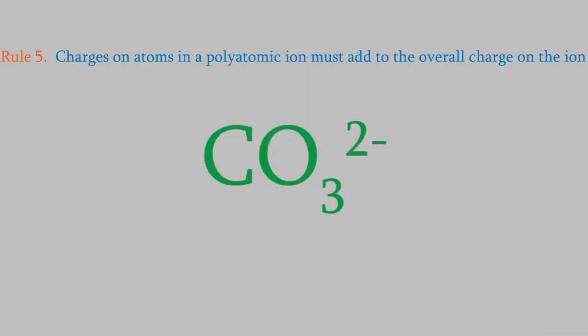We said a moment ago that oxygen usually has a charge of minus two. Since there are three oxygens in carbonate, that's a total of minus six for the oxygens. What about the carbon? Rule five tells us that the charges on each atom must add up to the overall charge on the ion, which in this case is minus two. So that means the carbon must have a charge of plus four.